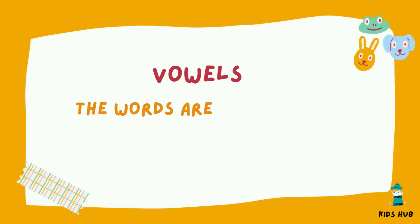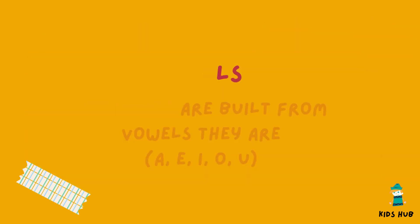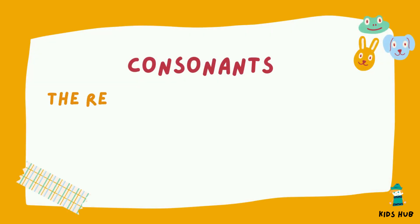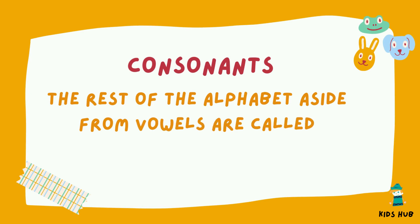Vowels — word syllables form from vowels; they are A, E, I, O, U. The rest of the alphabet, the letters set apart from vowels, are called consonants.